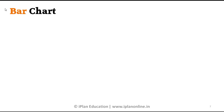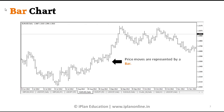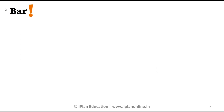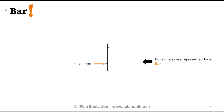Another type of chart is a bar chart, where price moves are represented by a bar. We can see there is a bar with two ticks — one on the left hand side and another on the right. Normally on the left hand side you see the open at around 100, the low at 95, the high at 110, and then the close at 105.